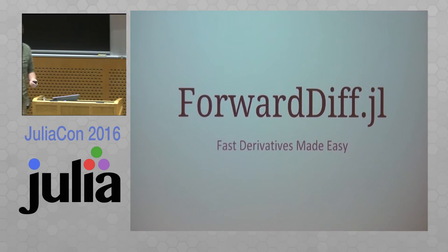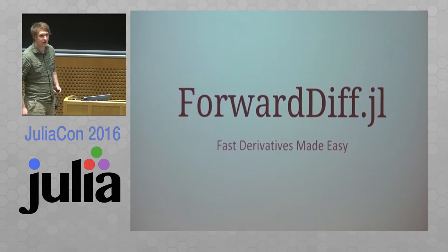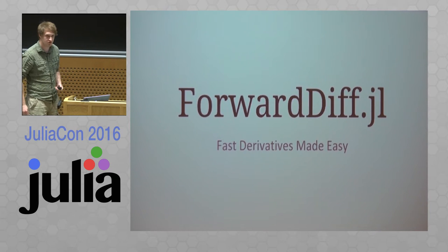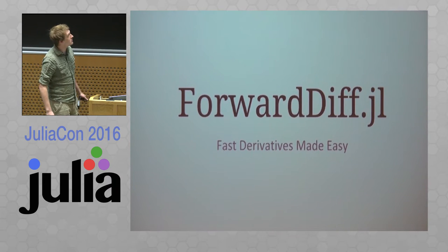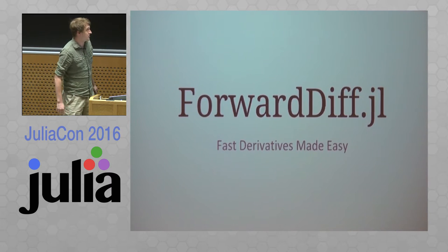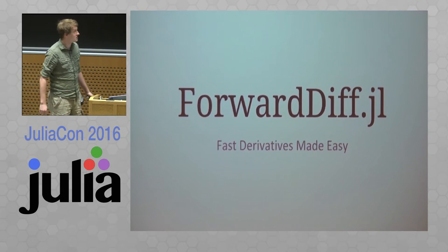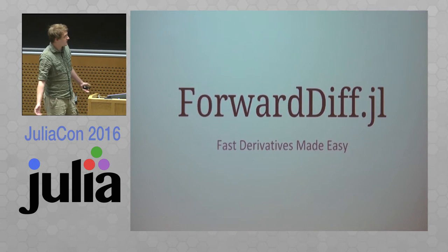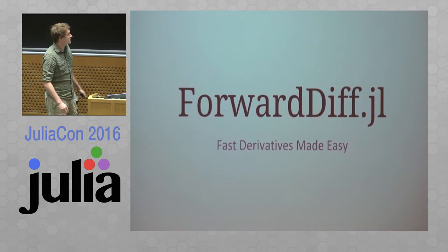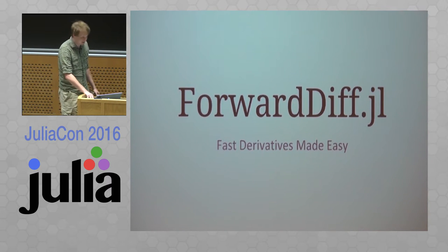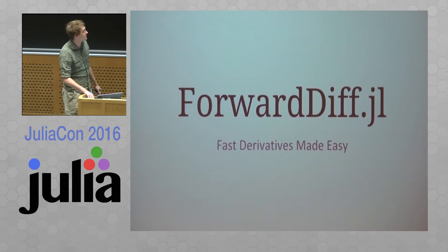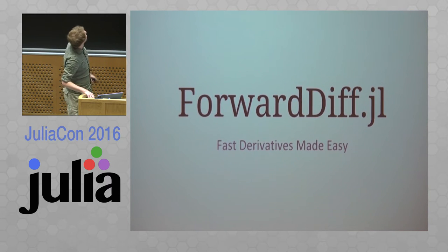I'm Jarrett. I work with the Julia Group at MIT. I kind of wear a couple different hats from day to day, but today I'm wearing my ForwardDiff maintainer hat. ForwardDiff, as Miles talked about, is a forward mode automatic differentiation library written in Julia. The purpose of the package is kind of in the subtitle for the talk — I really like to make it easy for people to efficiently take derivatives of Julia code without having to know too much. We'll see if we get the fast and the easy part by the end of this.